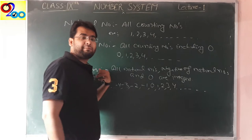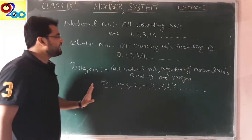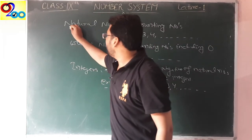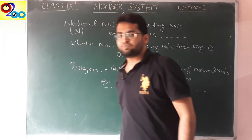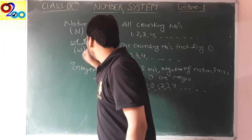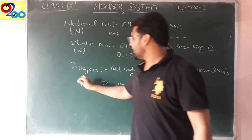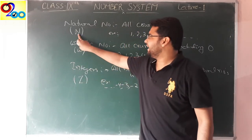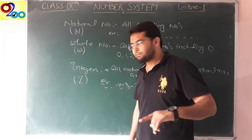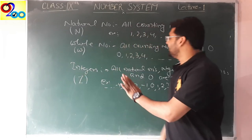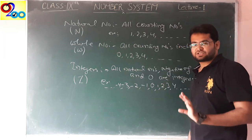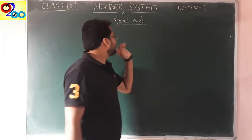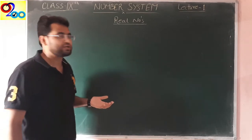So the basic numbers are natural numbers, whole numbers, and integers. Natural numbers are indicated by the letter capital N, whole numbers by capital W, and integers by capital Z. These are the basic numbers — the numbers that we already know are part of the real numbers.